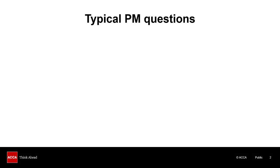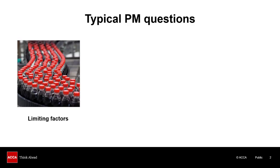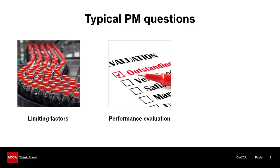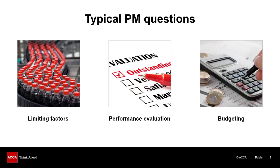We're going to look at three typical performance management questions that come up in section C of the exam. We'll start with limiting factors and a challenging spreadsheet question. We'll move to performance evaluation, a question that mixes numerical calculation-based skills with writing skills. And lastly, we'll look at a budgeting discussion-based or discursive style question.